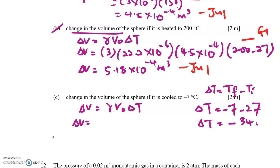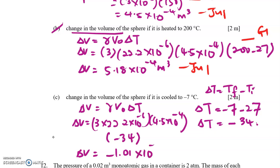So delta V equal to 3 times alpha times V_naught times negative 34. Delta V equal to negative 1.01×10^-6 meter cube.